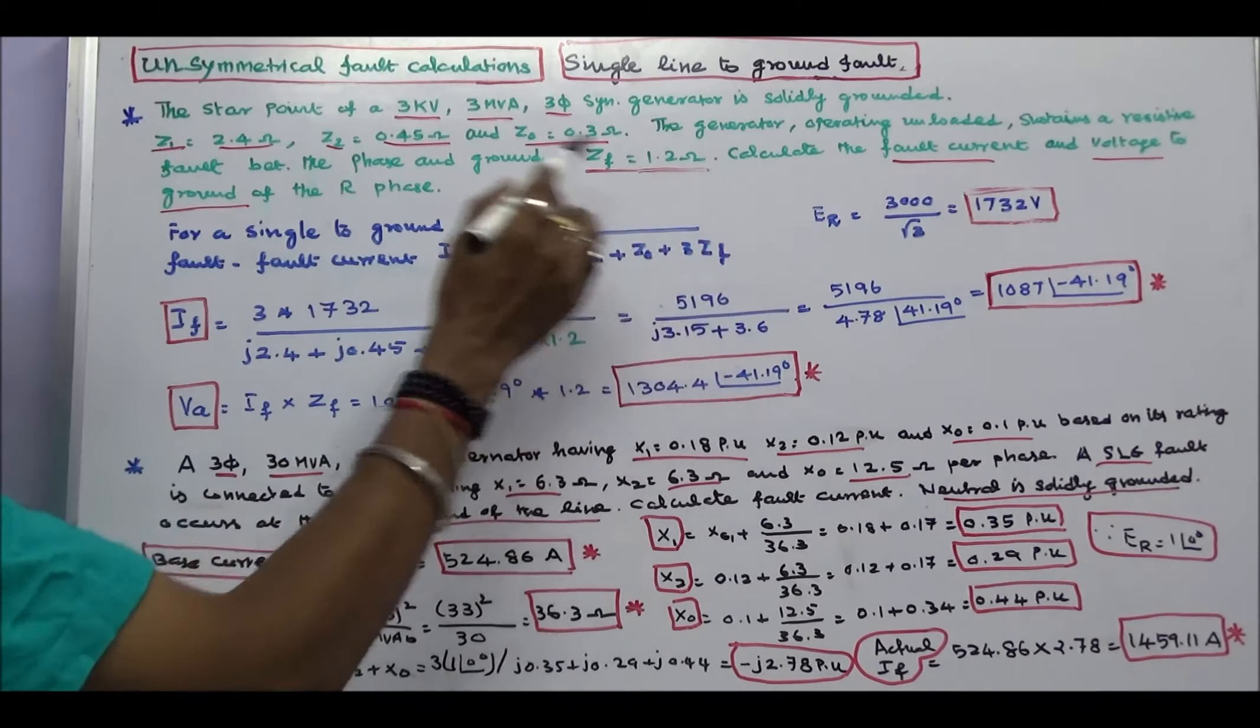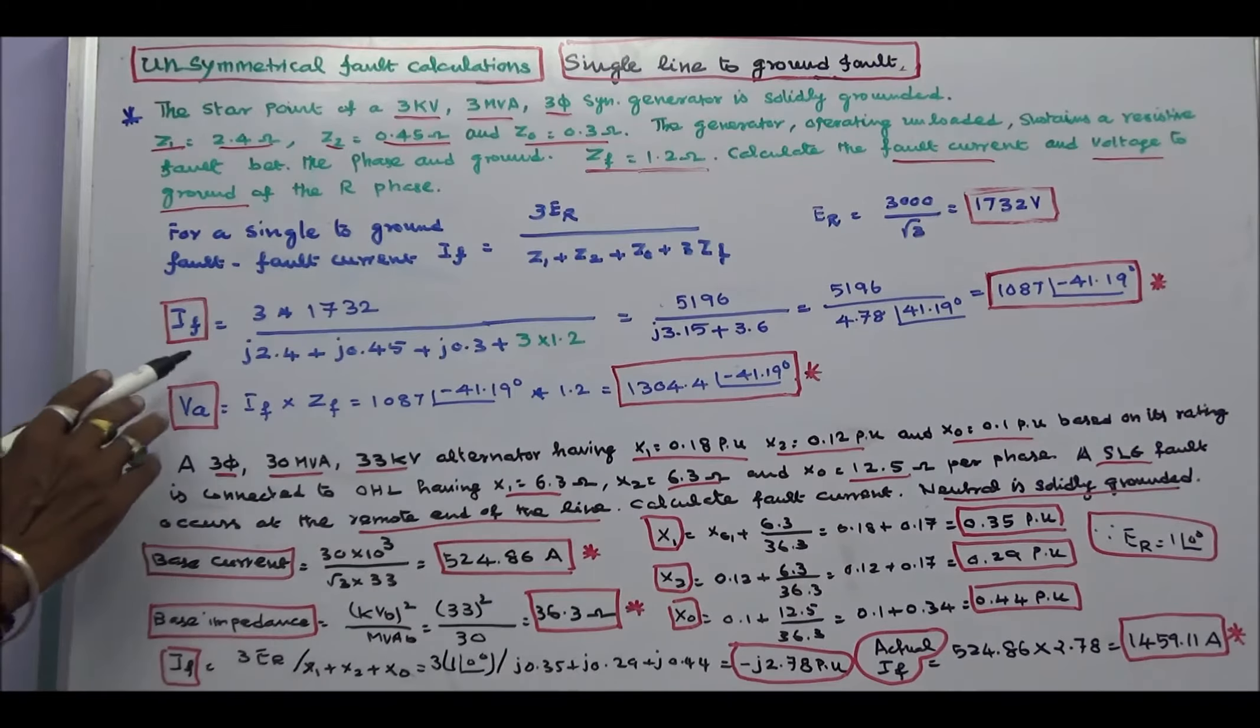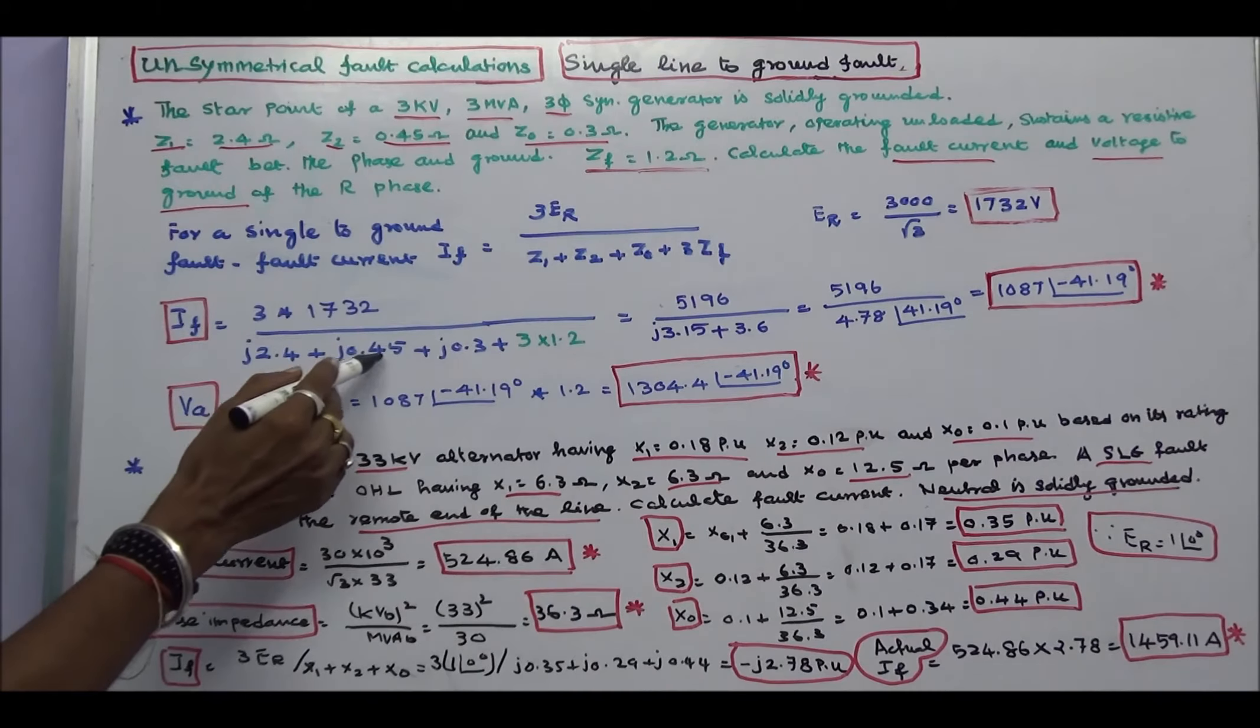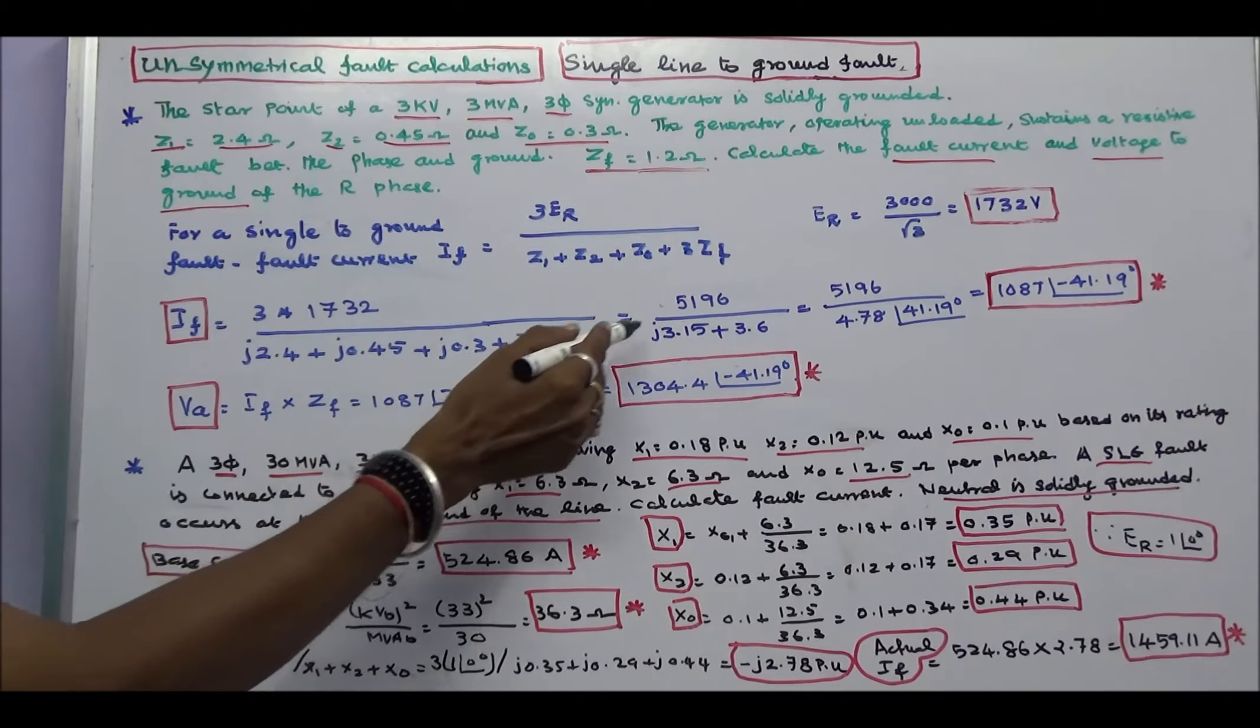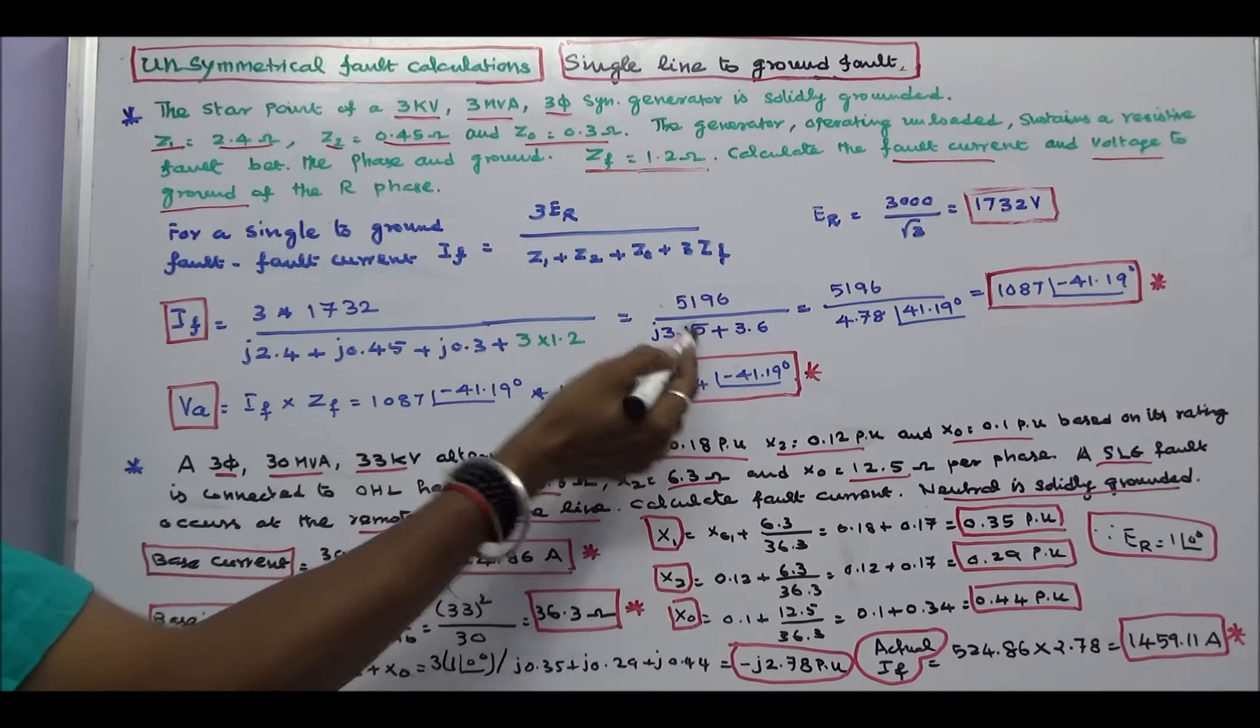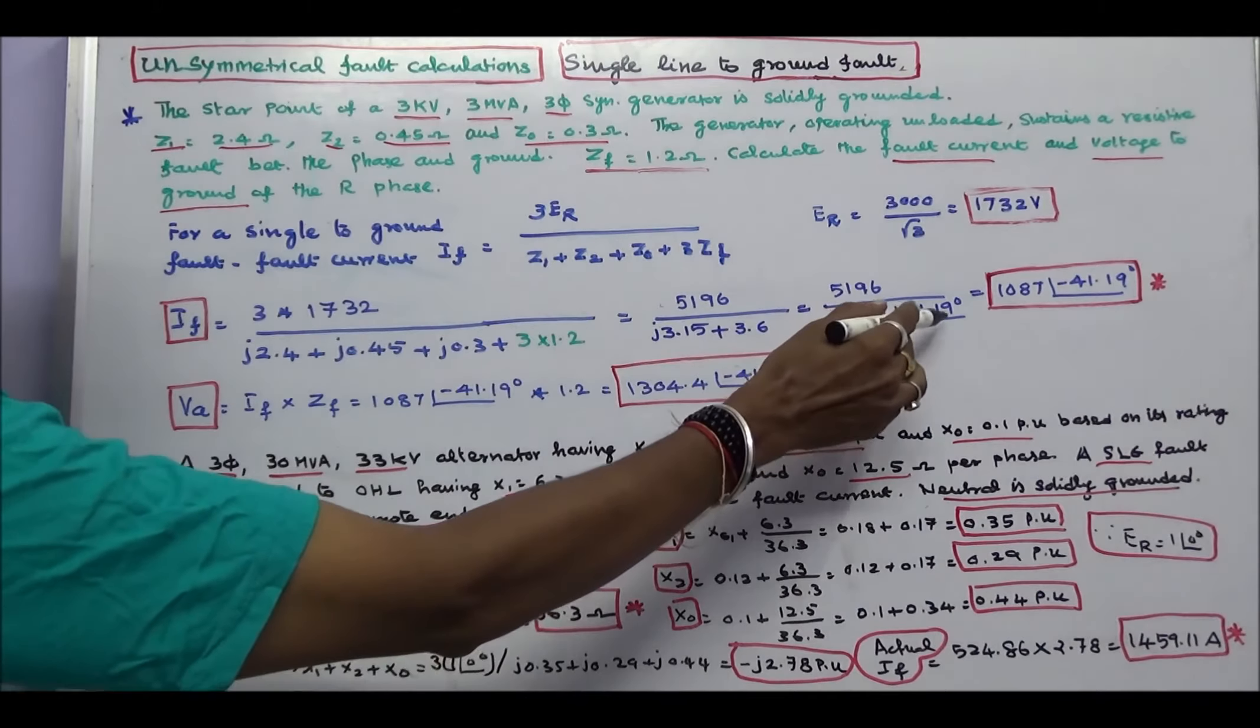ER is equal to 3000 divided by root 3 that is equal to 1732 volts. Fault current IF is equal to 3 into 1732 divided by J2.4 plus J0.45 plus J0.3 plus 3 into 1.2. That is equal to 5196 divided by 3.6 plus J3.15. Which is in rectangular form we convert it to polar form. That is 4.78 angle 41.19 degrees.